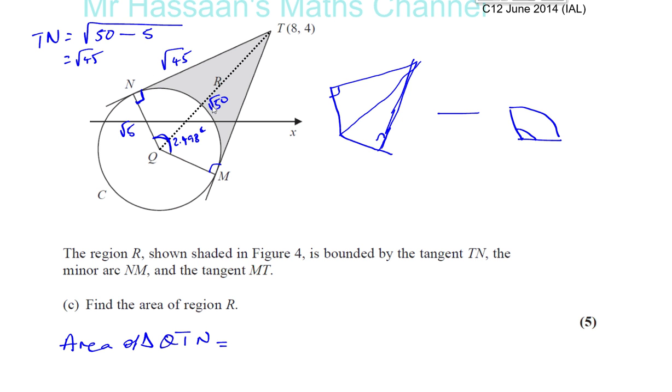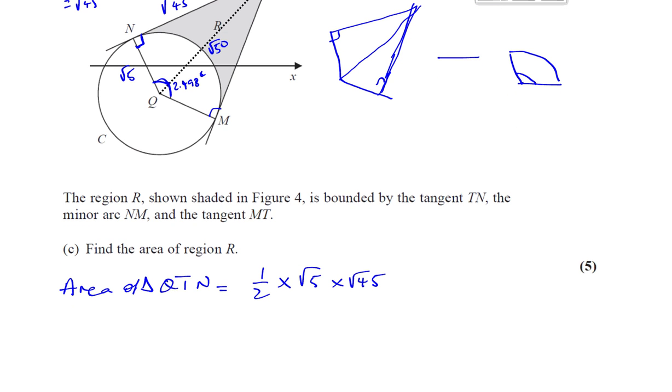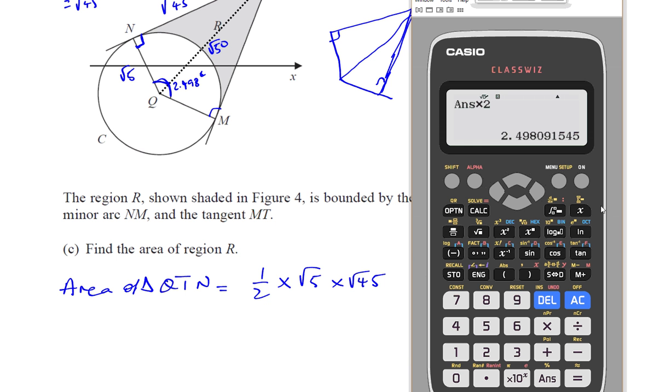The square root of root 50 squared is 50, minus the square root of root 5 squared is 5, which gives you 45, so it's the square root of 45. So we can see that the area of triangle QTN is going to be a half times the base, we could say that's root 5, times the height, we could say that's root 45.